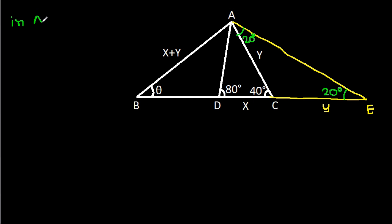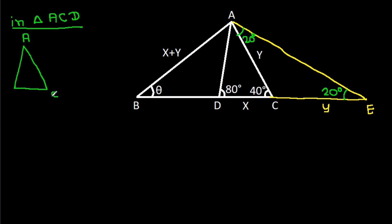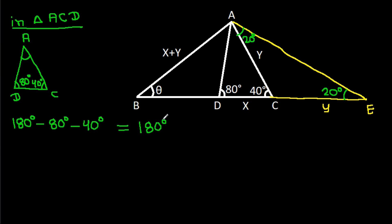Now in triangle ACD, angle ADC is 80 degrees and angle ACD is 40 degrees. So the remaining angle will be 180 minus 80 minus 40, and it is 60 degrees. This angle is 60 degrees.